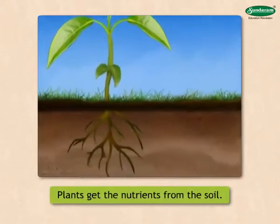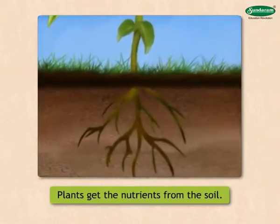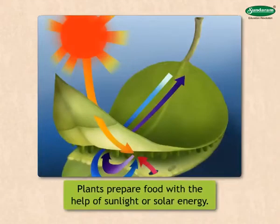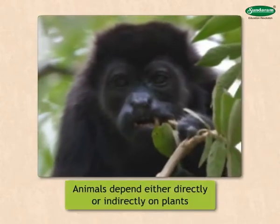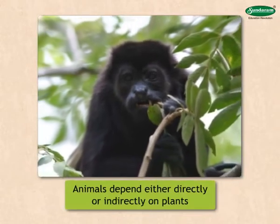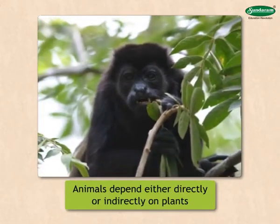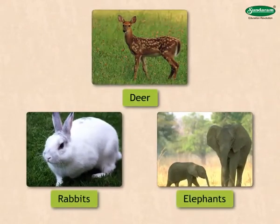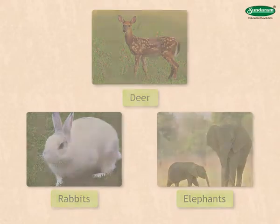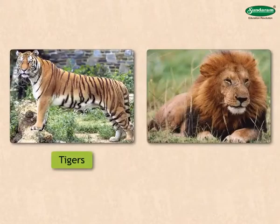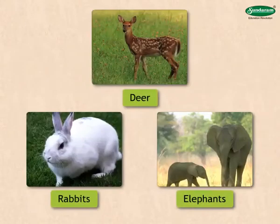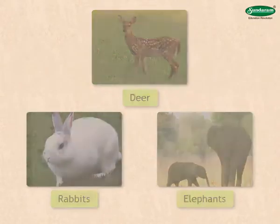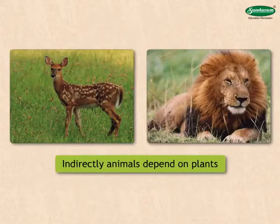Plants get the nutrients they need for their growth from the soil. They prepare food with the help of sunlight or solar energy. Animals depend either directly or indirectly on plants for their food. Animals like the deer, rabbits and elephants get their food from plants, whereas animals like tigers and lions depend on these animals for their food. This means that indirectly they too are dependent on plant life.